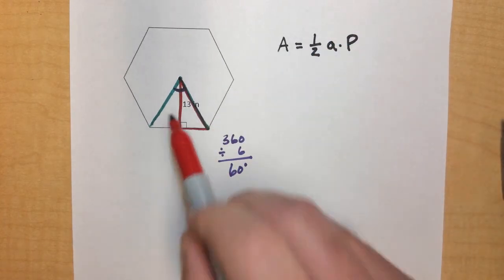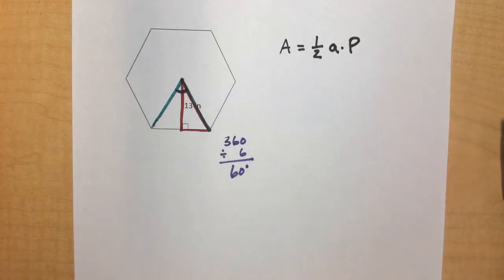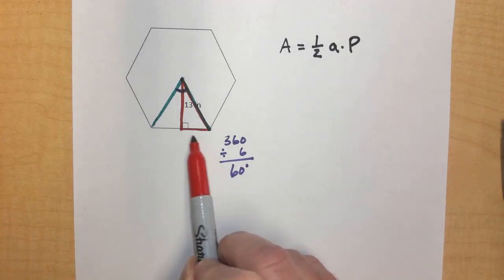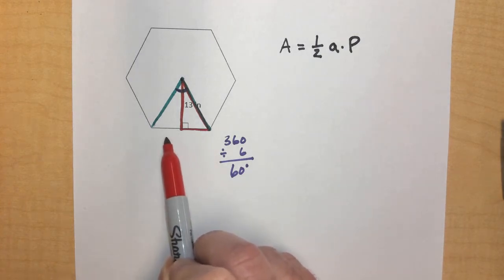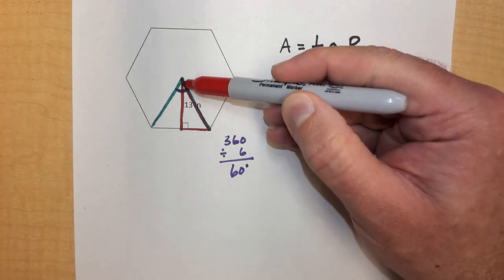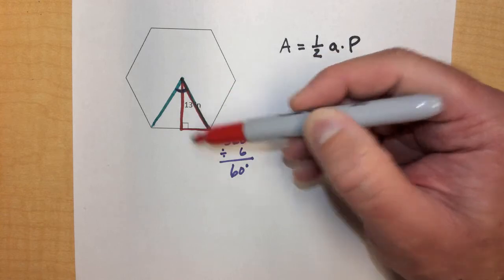And that apothem also does a couple of things. Because it is perpendicular to the side, it acts like a perpendicular bisector to the side. So this part of the side is going to be equal to this part of the side. Basically splits it in half. And it also bisects the angle that it touches up here. So this central angle is also split in half by the apothem.